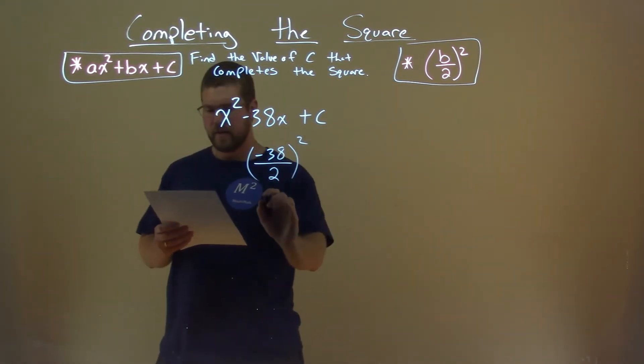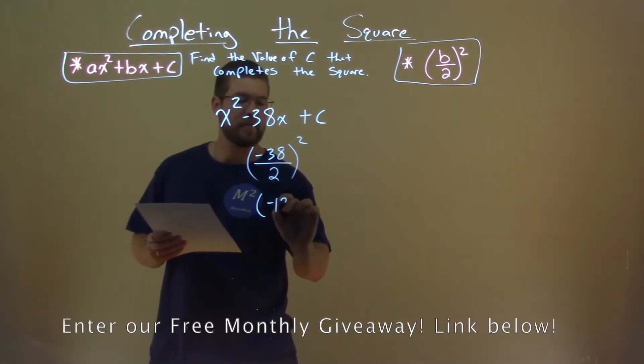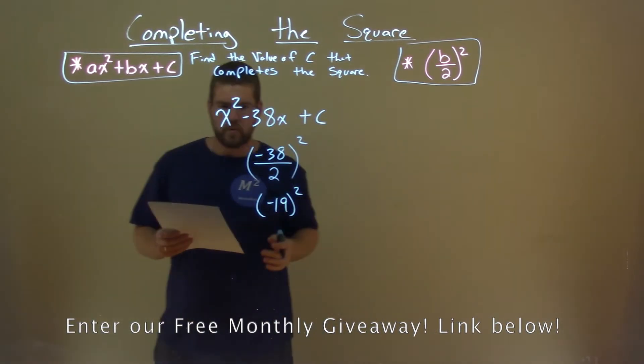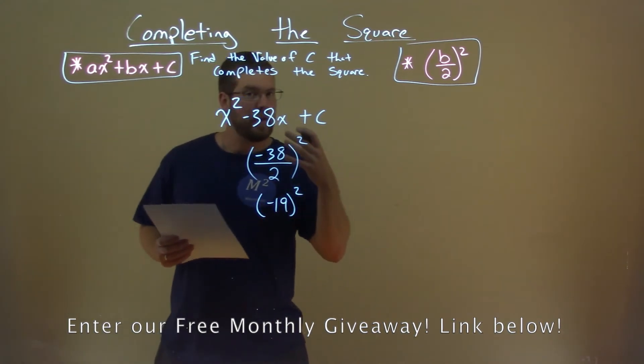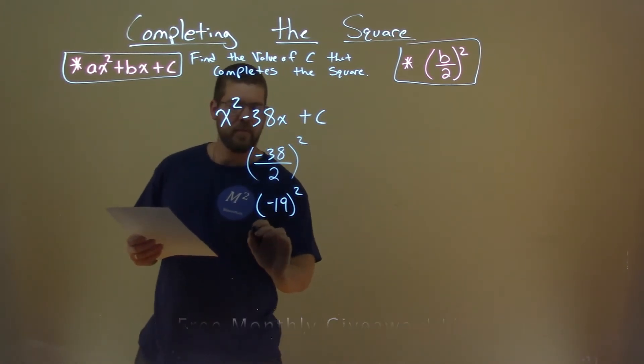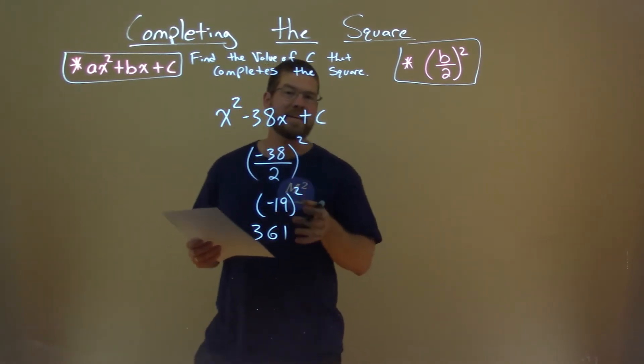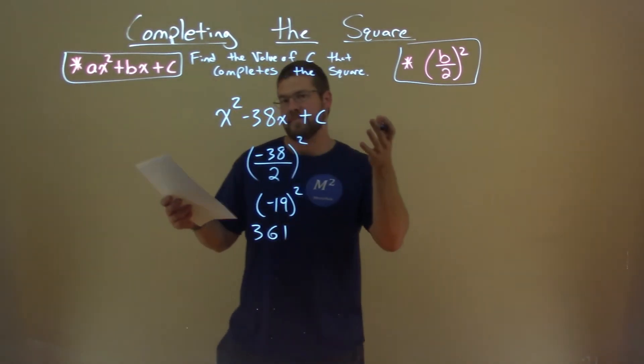Well, negative 38 divided by 2 is a negative 19. We can't forget to square it, though. We square negative 19, it becomes a positive 19, and then we get 361. And 361 is the c value that completes the square.